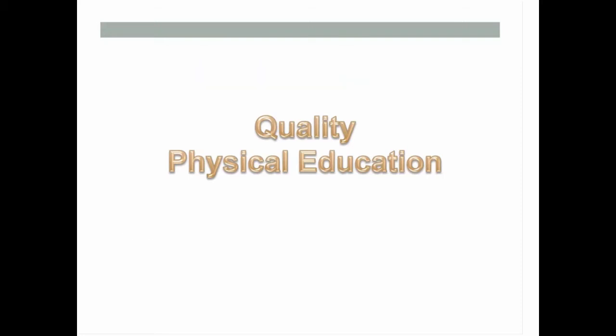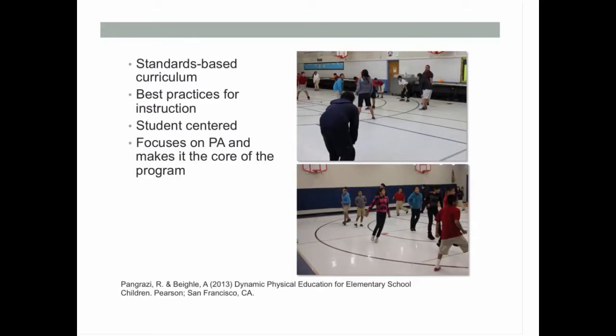Based on those five components, I'm going to spend time today talking about quality physical education, and then really spend some time talking about classroom and recess, which Active and Healthy Schools is primarily focused on. Quality physical education — I spend time on this because I think it has to be the foundation. If you have a program where students are sitting for 25 to 30 minutes during a 45-minute lesson, and then you go to the principal and say you want kids to be active during school, the principal might say, let's get them active during PE first.